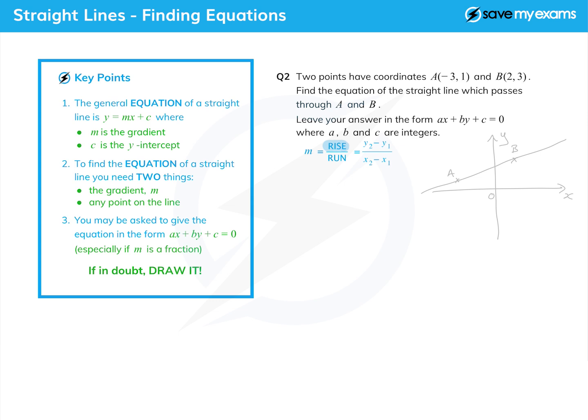It's basically rise over run, or some people call it up over across. If you've got two points, it's the difference in the y coordinates over the difference in the x coordinates. If we call this one (x1, y1) and this one (x2, y2), we can now just find the gradient from that.